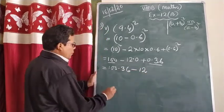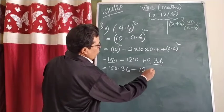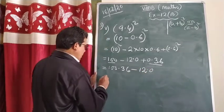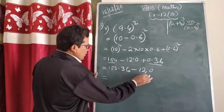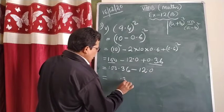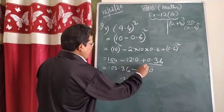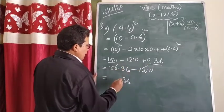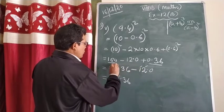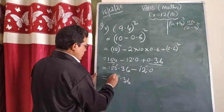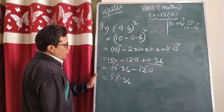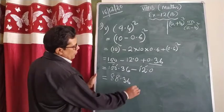Now if you do 100.36 minus 12.0, the decimal column gives zero, the hundredths give 36, and subtracting: this gives 8, and here also 8. So the answer will be 88.36. I hope it is clear to you.